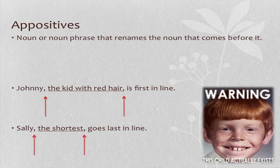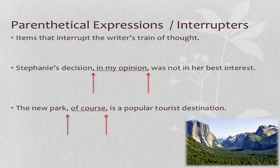Another use of the comma is in what we call appositives — nouns or noun phrases that rename the noun that comes right before them. For example, 'Johnny, the kid with the red hair, is first in line.' The kid with the red hair is an appositive; it gives further description of Johnny. Since it is non-essential — meaning we don't have to have it for the sentence to make grammatical sense and it could be removed — we put commas around it. We could just say 'Johnny is first in line,' but if we want to add the appositive, we put commas around it.